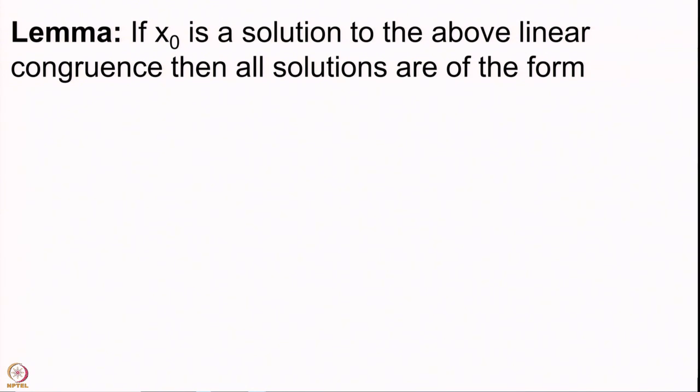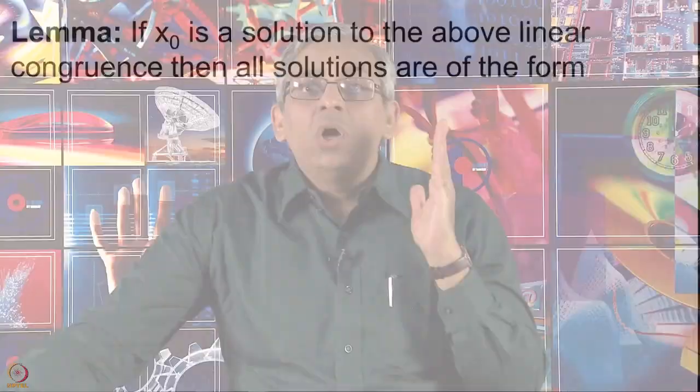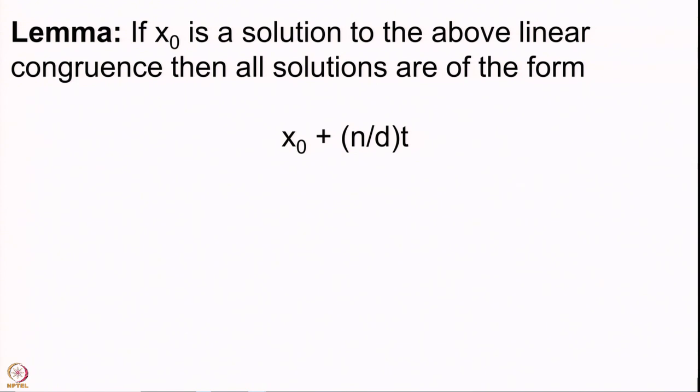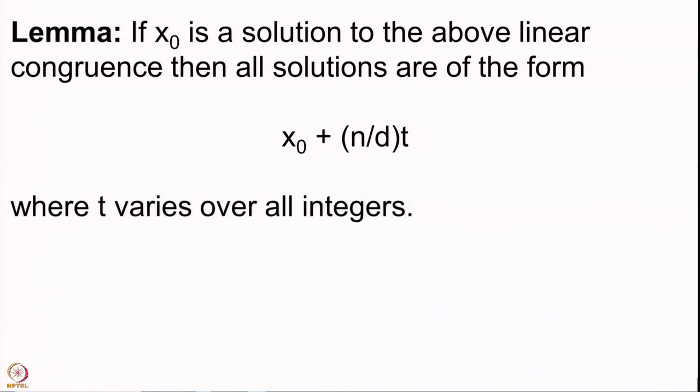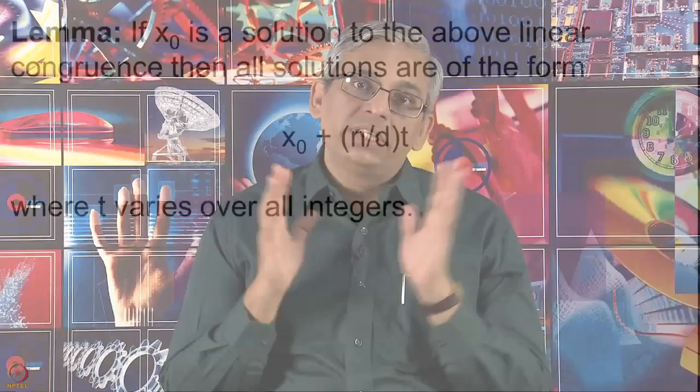If you have a solution x₀ to the linear congruence Ax ≡ b (mod n), then all solutions are of the form x₀ + (n/d)·t where t varies over all integers. If you have one solution, all other solutions are obtained by adding multiples of n/d to that solution. To prove this lemma we must show: first, that x₀ + (n/d)t is a solution for every t; second, that any other solution is also of this form.